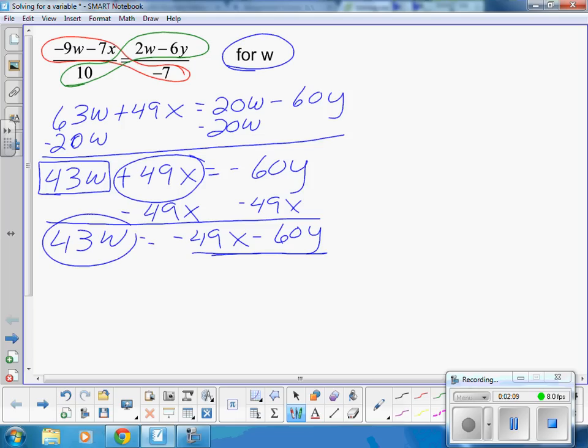Now, I have 43W. I need to divide by the 43. Just like if you had 2X equals 7, you would divide by the 2. When I divide by the 43, it cancels out here, and I divide by the 43 there. I am left with my answer of W equals this.